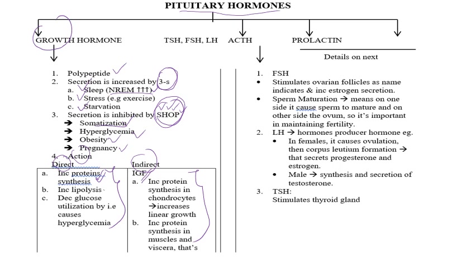Growth hormone is also inhibited by obesity and pregnancy. Its effects include lipid breakdown, decreased glucose utilization by cells, and may result in hyperglycemia. This is why we say growth hormone is a diabetogenic hormone. So: increased protein synthesis, increased lipid breakdown, and decreased glucose utilization by cells resulting in hyperglycemia.